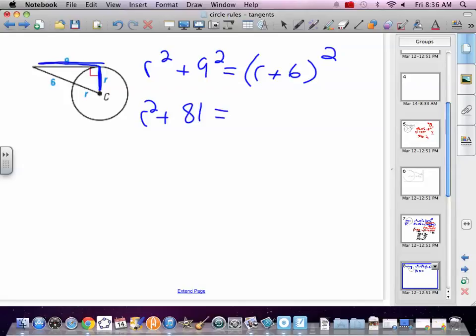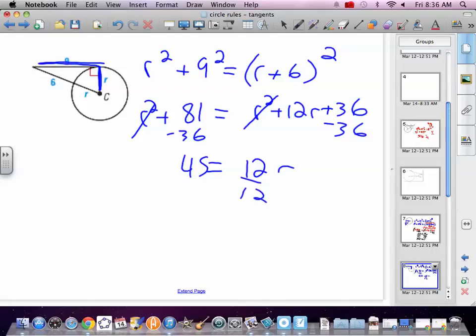So, I hope you've paused this and started and did it on your own as I run through it. So, R squared is going to cancel. Minus 36. What's that? 45. R equals 45 divided by 12. And 9 twelfths is 75. R equals 3.75.